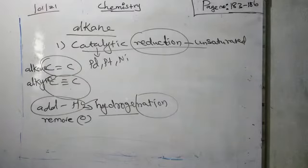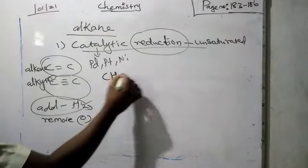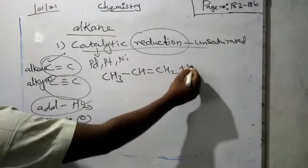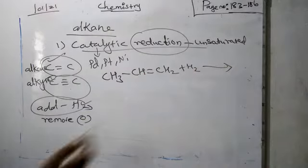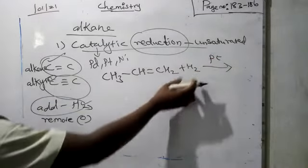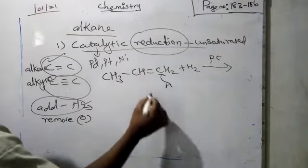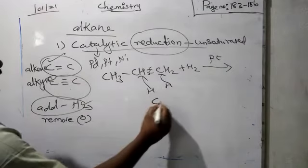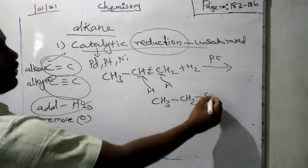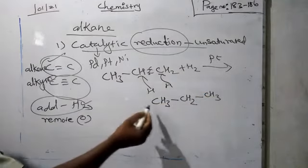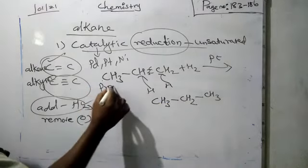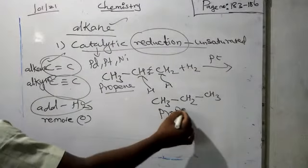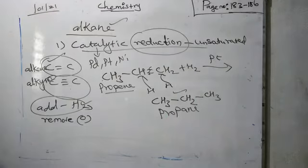Let us see the equation. Propene is a double-bonded (alkene) compound. Hydrogen is added in the presence of platinum catalyst. One hydrogen is added to the first carbon and another to the second carbon, so the double bond becomes a single bond. We get CH₃–CH₂–CH₃, propane. This converts propene (alkene) to propane (alkane).